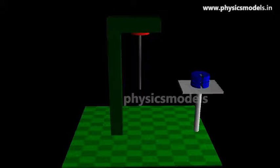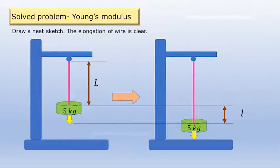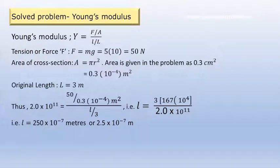In a 2D sketch it will look as given here. The initial length of the wire is capital L, which is shown there on the left. We hang the 5 kg mass, the weight acts downwards, and on the right-hand side we can see that the weight due to the 5 kg mass elongates the wire. The wire elongates by a distance small l, which we have to find in this problem.